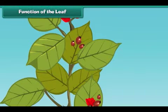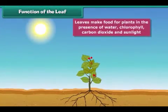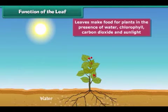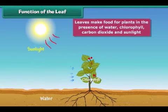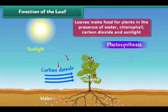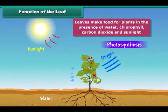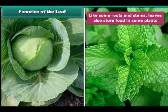The main function of a leaf is to make food for the plant. To make food, leaves use water, chlorophyll, carbon dioxide and sunlight. This process of making food is called photosynthesis. In this process, oxygen is released. All living things require oxygen for breathing. Some plants, like cabbage and mint, store food in their leaves — we eat these leaves to get nutrition.